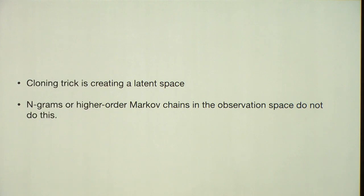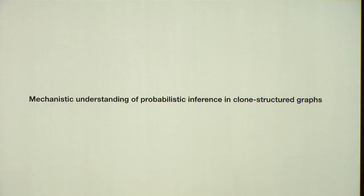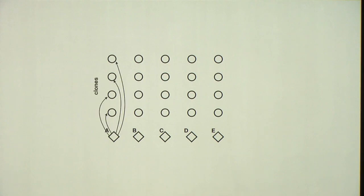This is a standard trick. Actually, it's invented in 1987. It's a compression technique called cloning. And we have modernized that technique because now we have put it in a probabilistic framework and using more machine learning techniques to learn it. So the cloning trick is creating a latent space. Those two different Bs are connected to the same observation, but they are hidden. It's not like n grams or higher order Markov chains on the observation space. It's creating a latent space.